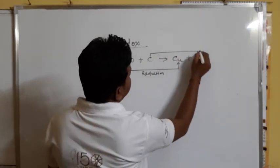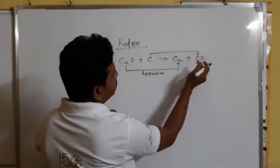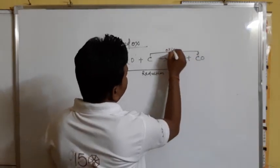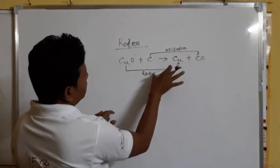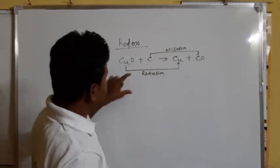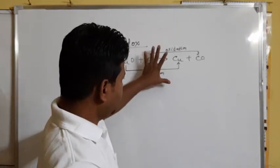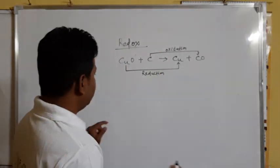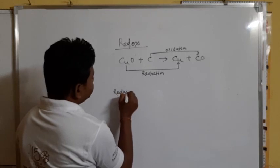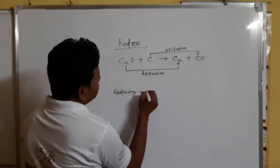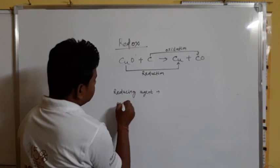Carbon combines with oxygen to form CO2, hence it is oxidation. As both reduction and oxidation are taking place, it is called a redox reaction — as already discussed. Now we will find out who is the reducing agent and who is the oxidizing agent in this reaction.